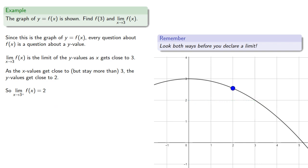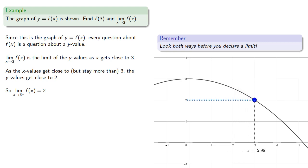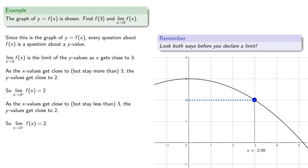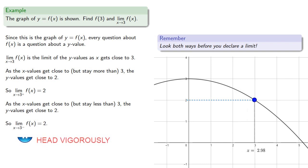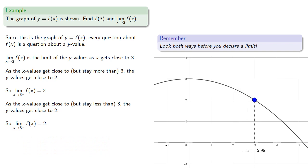Likewise, as the x values get close to but stay less than 3, the y values get close to 2. And so the limit as we approach 3 from below is 2. And since the limits agree, the limit as x approaches 3 of f of x is equal to 2.